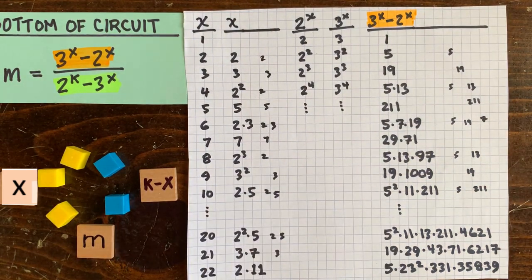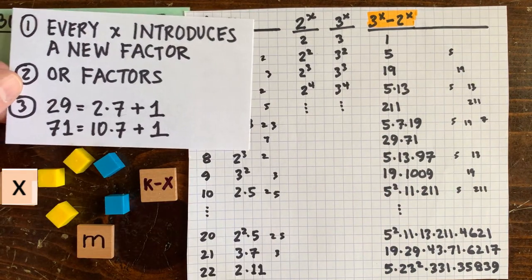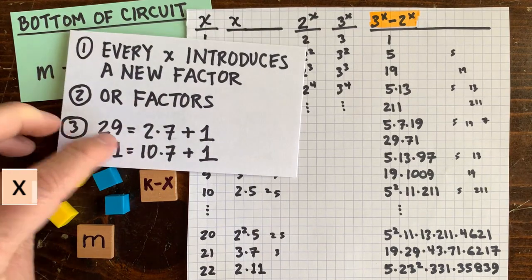First, every x introduces a new factor here, not just the prime x's. Like x equals 4 introduces 13. Second,